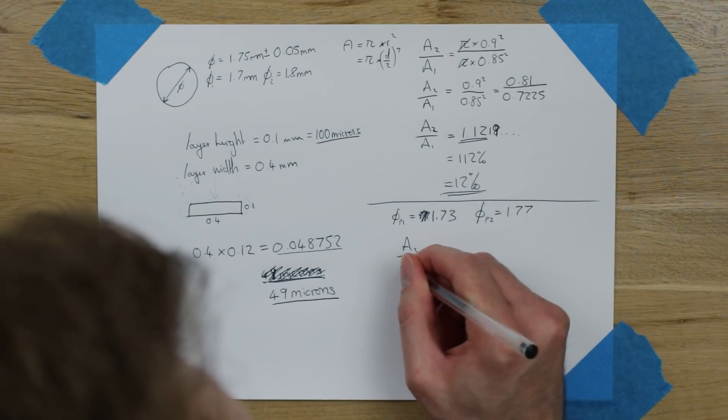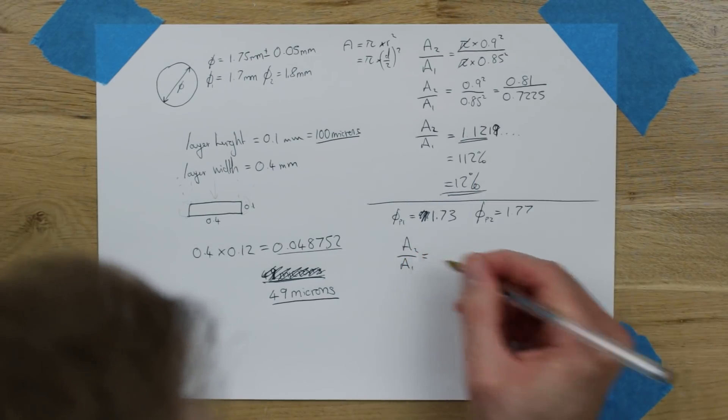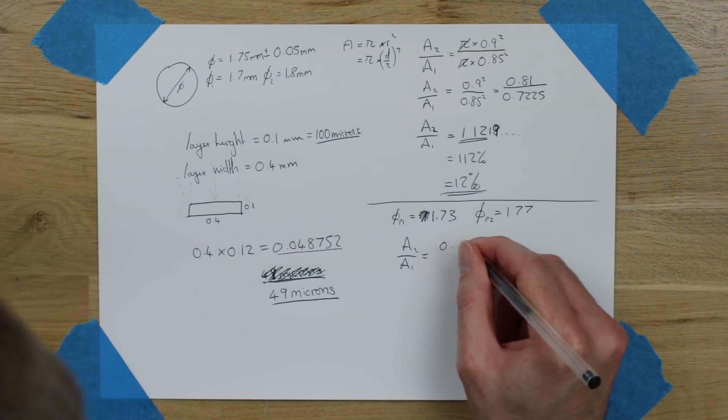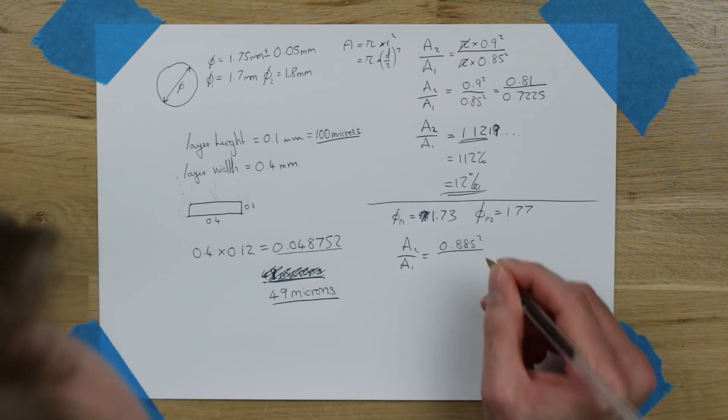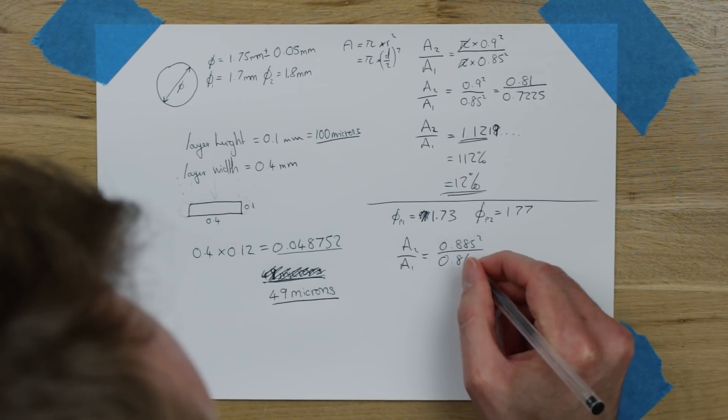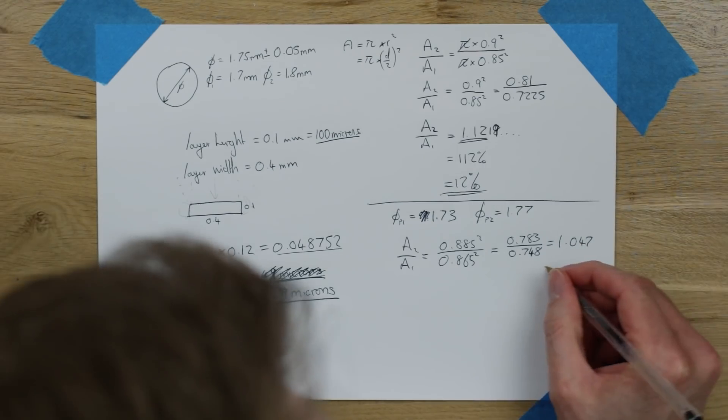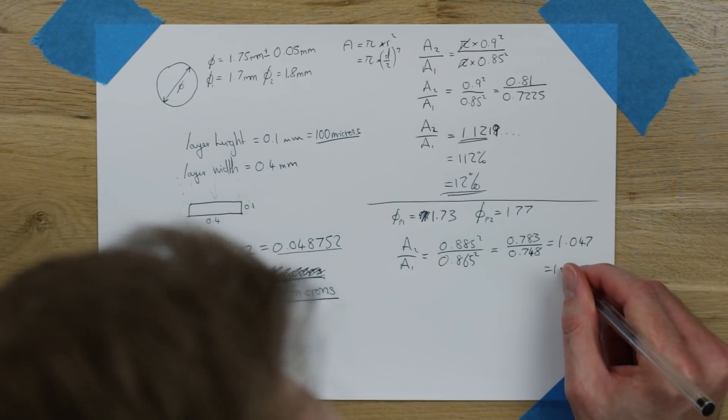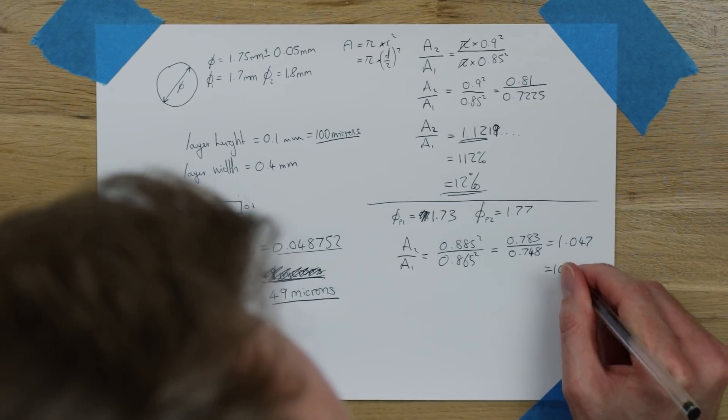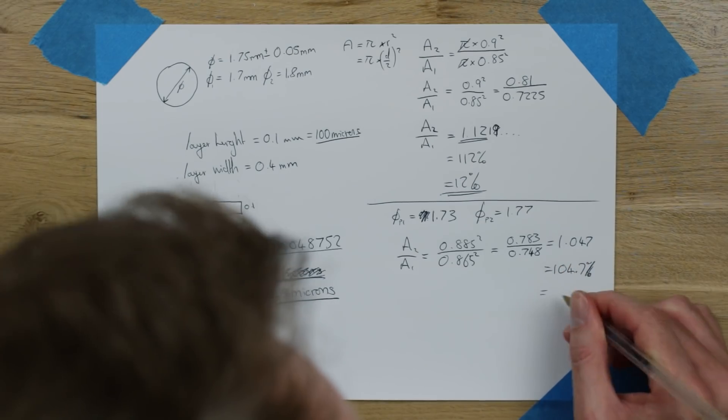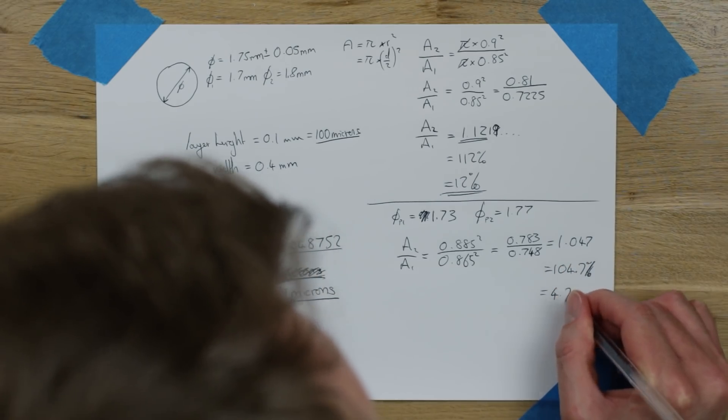So again, we do the areas. A2 over A1. We know that the pi is cancelled out, so we don't need to put those in. Got 0.885 squared over 0.86 squared. And that gives you 1.047. So that's equivalent to this. And this is then 100, well, 104.7%. So your change is 4.7%.